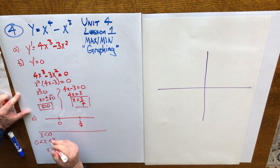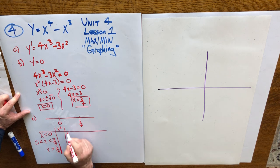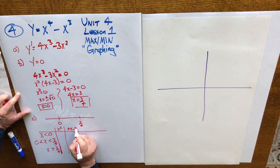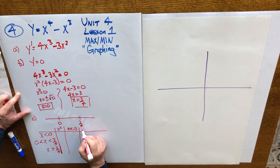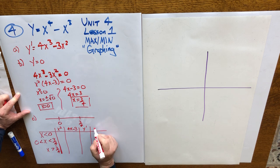So we're making our first derivative chart and we're going to consider the factors of the first derivative. x squared is one factor, 4x minus 3 is a second factor. What does that mean for the first derivative and what does that suggest for the function?